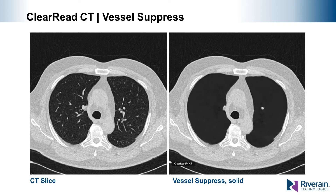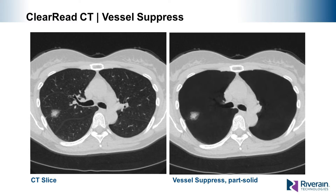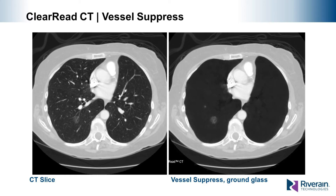Vessel suppression makes detection and characterization considerably more efficient and accurate for both the radiologist and the machine. Here is an example showing a part-solid nodule finding. Given the high reader disagreement when typing part-solid nodules, it's important that both the solid and ground glass components are clearly delineated. Suppressing the vascular structure provides a much better opportunity to not only type the nodule, but to accurately measure both the entire nodule and the solid component. In the case of a ground glass nodule, which can be difficult to detect and segment due to its low absorption, vessel suppression removes the entangled vascular structure, providing an unobstructed view of the nodule and making characterization much easier.